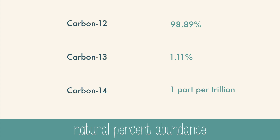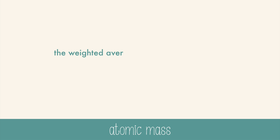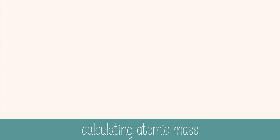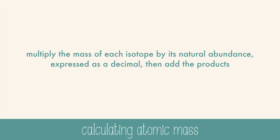To account for the different amounts of the isotopes that exist in nature, scientists use atomic mass. Atomic mass is the weighted average mass of the atoms in a naturally occurring sample of an element. To calculate atomic mass, you multiply the mass of each isotope by its natural abundance, expressed as a decimal, and then you add the products.